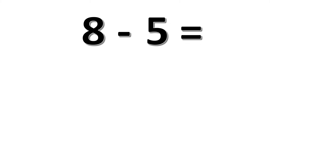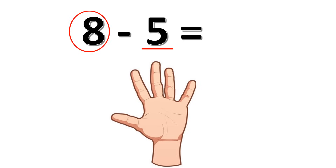First example: 8 minus 5. Which one is the bigger number, 8 or 5? Yes, 8 is the bigger number. So we're going to start counting backward from 8, and 5 is the smallest number, so we're going to have 5 fingers up. Starting from 8: 7, 6, 5, 4, 3. So 8 minus 5 is equal to 3.